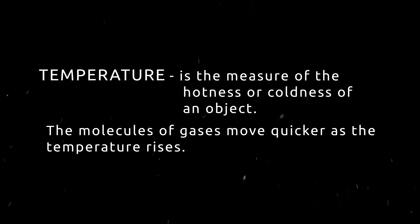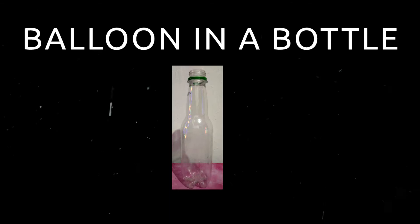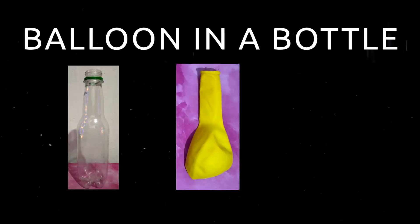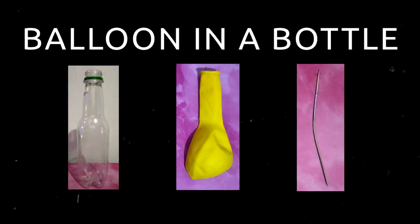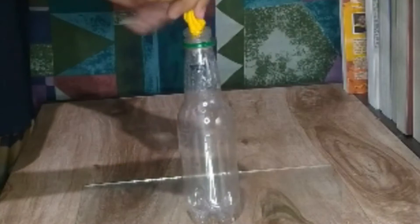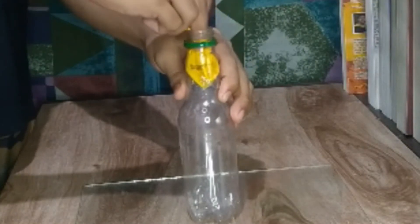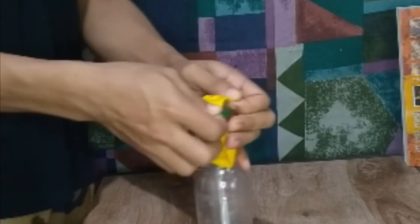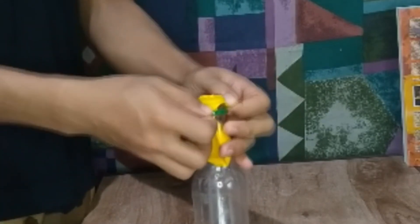Are you now ready to do the activities? Let's get started. The first activity is entitled Balloon in a Bottle. We will need a clean plastic bottle, a balloon, and a pin. Please follow the procedure properly. Insert the balloon in a bottle. Stretch the tip of the balloon such that it covers the mouth of the plastic bottle.